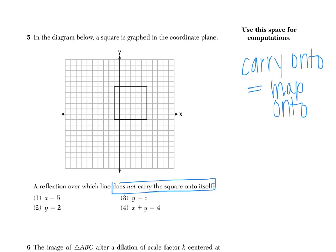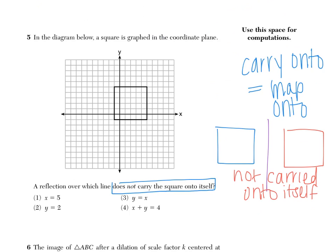And what we mean by that is if I take this square and reflect it over, say, this line, this square then becomes this one. This is not carried onto itself. But if I take this square and reflect it over this line, this vertice crosses the line and goes the same distance away. So it maps onto the opposite vertice. This vertice does the same thing. So now the square becomes exactly what it was before the reflection. It carries onto itself.